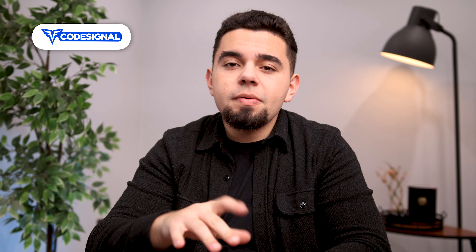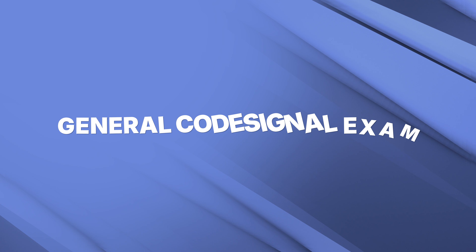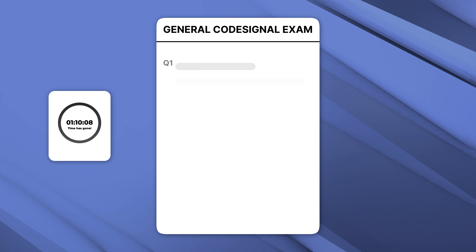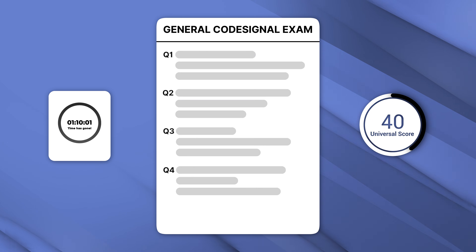Next up, we have the CodeSignal, which was given to me by companies like Netflix and Tinder. The most notable thing about CodeSignal is that these are usually proctored, which means most times you'll have your camera on. Unlike Byport, these tend to be LeetCode or algorithmic-style problems. There's a general CodeSignal exam — a 70-minute test consisting of four questions — and the score you receive acts as a universal score you can send to multiple companies that request a CodeSignal score from you.